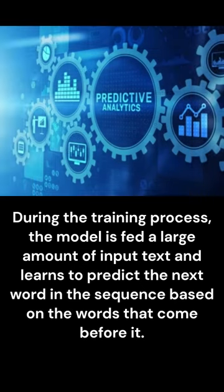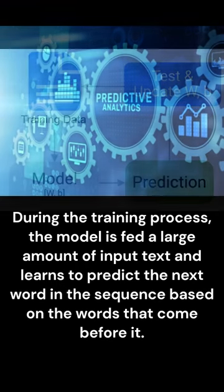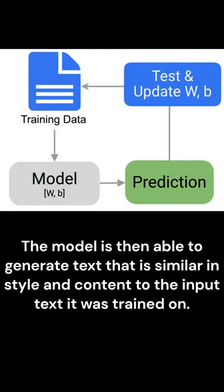During the training process, the model is fed a large amount of input text and learns to predict the next word in the sequence based on the words that come before it. The model is then able to generate text that is similar in style and content to the input text it was trained on.